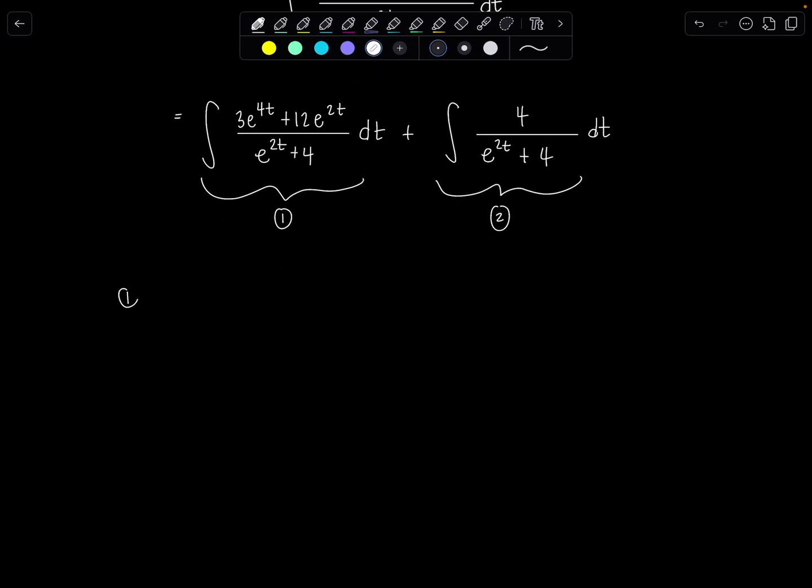So if we focus on the numerator in integral number 1, like I said, 3e to the 4t and 12e to the 2t, we can factor out a 3e to the 2t, they have that in common. And then I'm left with e to the 2t plus 4, which is just beautiful, because that's exactly what's sitting in the denominator. And then we can go ahead, cancel out e to the 2t plus 4, and now I'm just left with integral 3e to the 2t dt. Oh, how fabulous, how relaxing.